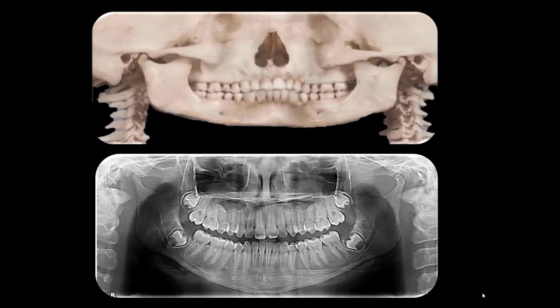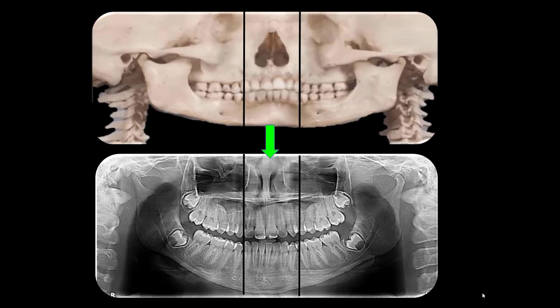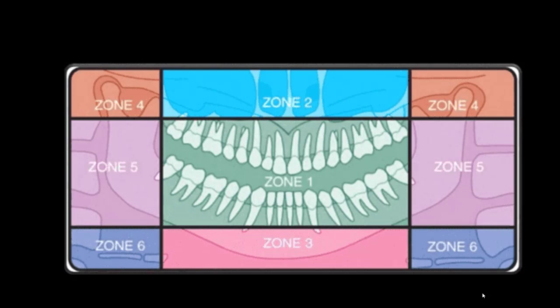On the part 1 video, we talked about what a panoramic radiograph is — it's like opening the skull and looking at it. The middle part looks like an anterior-posterior radiograph and the sides look like lateral radiographs. We talked about six zones that we can divide a panoramic radiograph into, so while reading and interpreting it you won't miss any part. We talked about the anatomical landmarks in zones 4, 5, and 6.